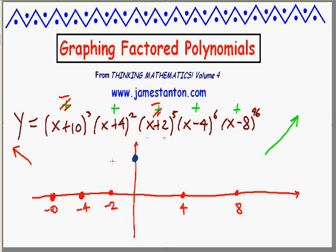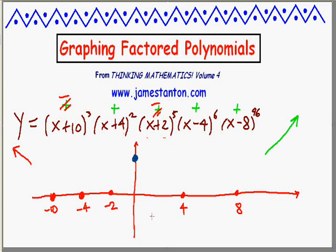Alright, I feel like I deserve half points right now. I've graphed this function — I know it crossed the x-axis at these five particular values. I know it's positive at the y-intercept. I know it wants to be huge and positive as it goes extremely far to the right, and huge and positive as it goes extremely far to the left. Now I have to connect the dots, but I've got to be a little careful. I don't really know what's going on between −10 and −4, say. So let me examine this.